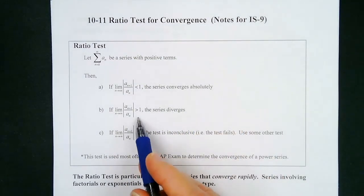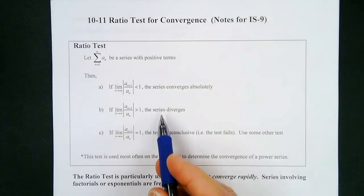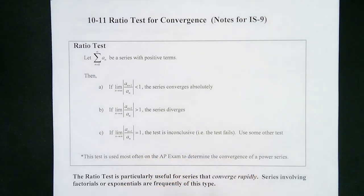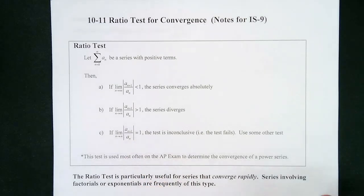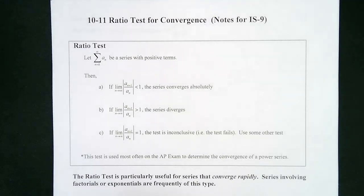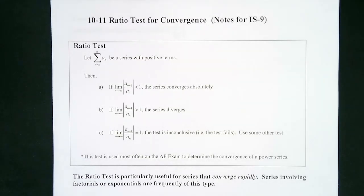If that limit turns out to be greater than one, the series diverges. And if it's equal to one, we can't use it — we'll have to figure out some other test. This is going to be a really important test on the AP Calculus BC exam. A lot of times we use this for series that converge very rapidly, especially things that involve factorials and exponentials, which are the two things that grow the fastest.